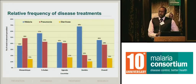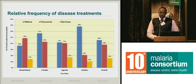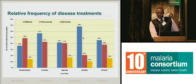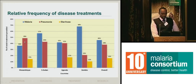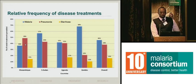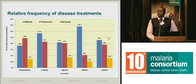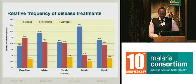Looking at how the treatments relate — amoxicillin for pneumonia, ACTs for malaria, and ORS and zinc for diarrhea — we see that in Zambia most of the treatments have been for malaria. For other countries they relate quite well, but for Mozambique we see more pneumonia than malaria. Overall, about 46% have been malaria treatments and 38% pneumonia.